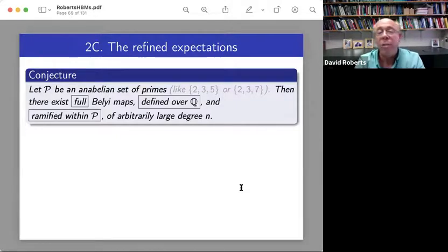Then there exists full Belyi maps. This is the big three again. Defined over Q and ramified within P of arbitrarily large degree. So just translating, if you give me 2, 3, 5 and say, is there such a Belyi map of degree above a million? I say yes.